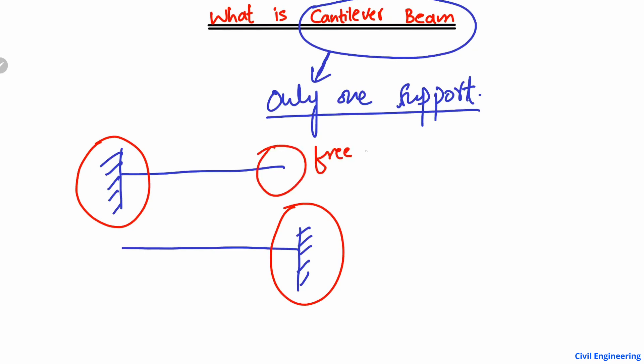This end will be a free end. It means that there will be no support provided at the other end of the beam. Only one support is provided, and this support must be a fixed support.